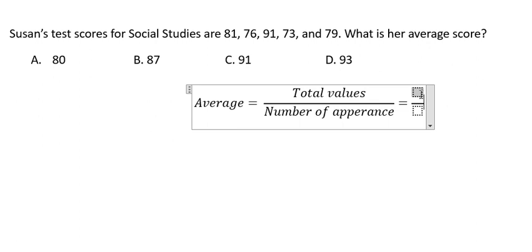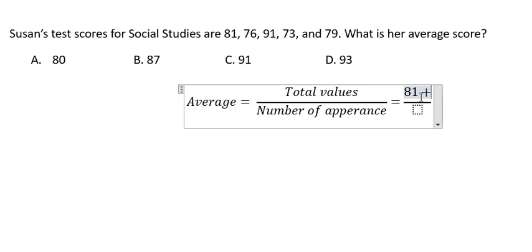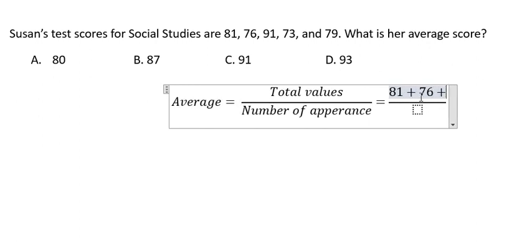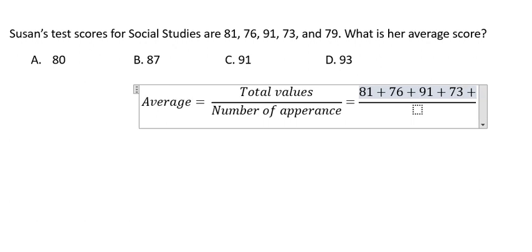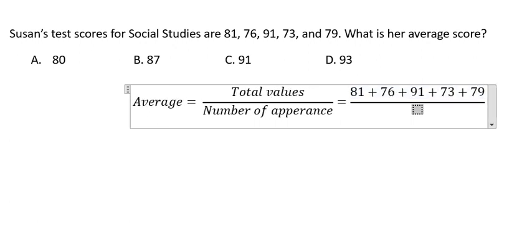So let's say we have 81 plus 76 plus 91 plus 73 plus 79. We see that there are five numbers in here, that means we divide by number five.